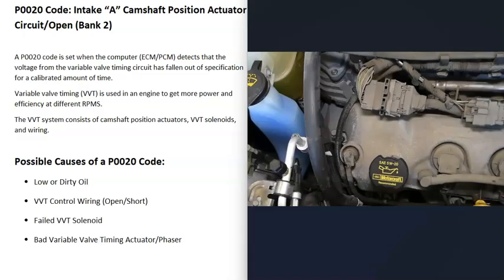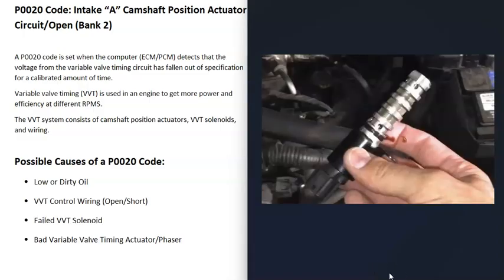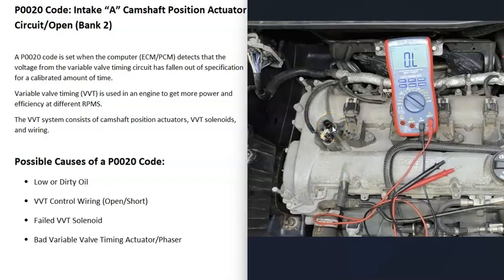The next possible cause is a bad variable valve timing solenoid. You can test these solenoids using a multimeter — there are two leads going into each solenoid and a rated ohms value they're supposed to be at. Check for resistance: for example, if a solenoid is rated at 9 ohms but you're reading 15 or 20 ohms, or getting no reading at all (open circuit), then that solenoid is bad and needs to be replaced.